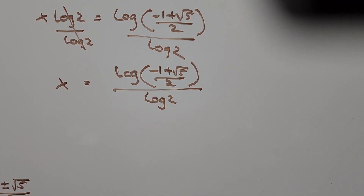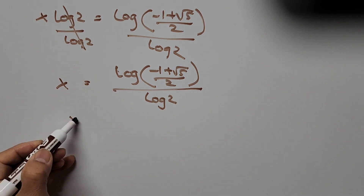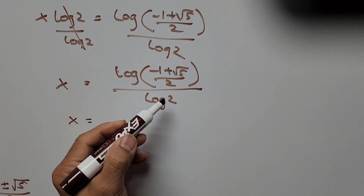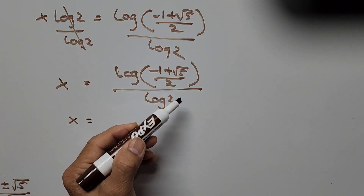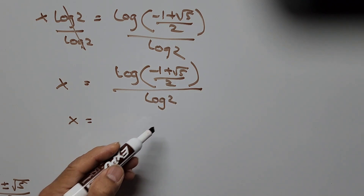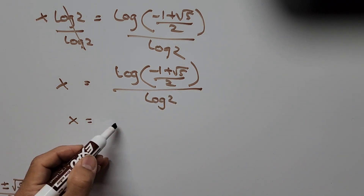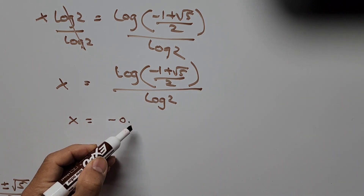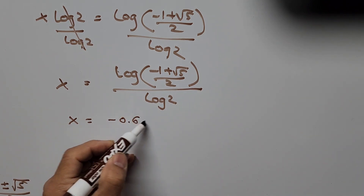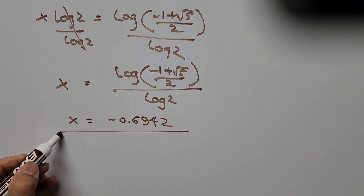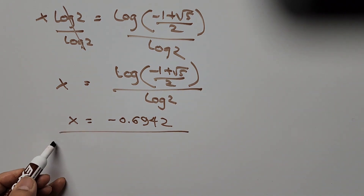For the sake of checking our answer, we need the numerical value of x. We have log of negative 1 plus the square root of 5 divided by 2, all over log of 2. Using our calculator, we get approximately negative 0.6942. That's the value of x, and we need to verify it.